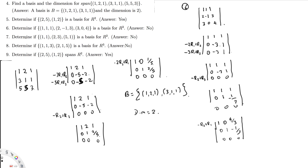The seventh question is: determine if it's a basis of R2. This has two linearly independent vectors; however, we shouldn't have three vectors. We only need to have two vectors. Like if it's just (1, 1) and (2, 3), then it's yes. But if we have three vectors, it's no. That's why the answer is no.